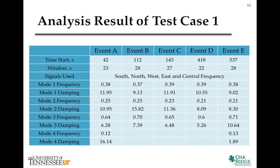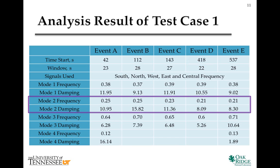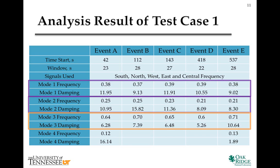Here is the analysis result. The frequency and damping ratio of the 0.23 Hz and 0.38 Hz modes are similar for the five events. The 0.65 Hz mode differs a bit for the five events. The 0.12 Hz mode was seen mostly in events A and E.